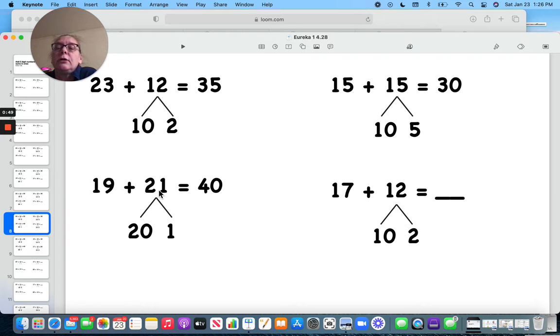Okay, let's do the next one. 12 and 2. So I can go 17 and 10 will give me 27, 28, 29. There we go.